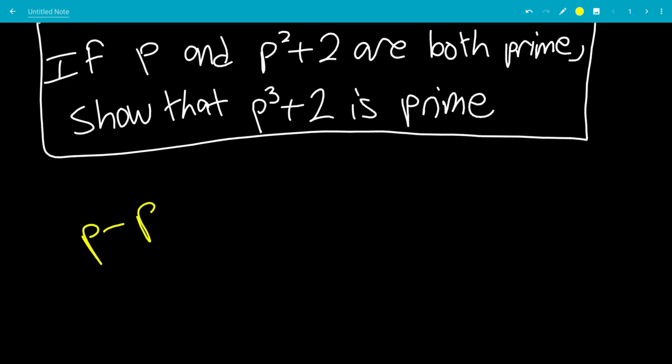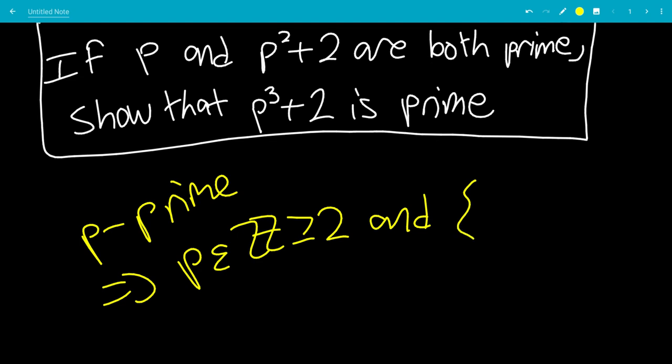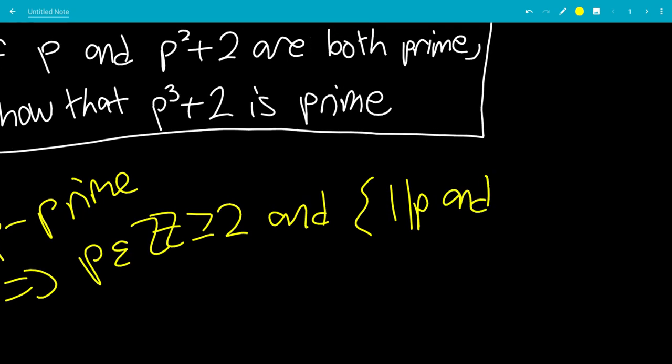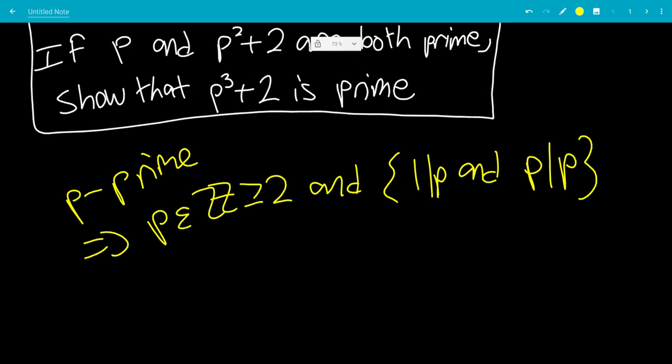So p is prime means that p is an integer bigger than or equal to 2. And we have another property that 1 divides p and p divides itself. So the 1 divides p is pretty obvious for any number, especially integers.